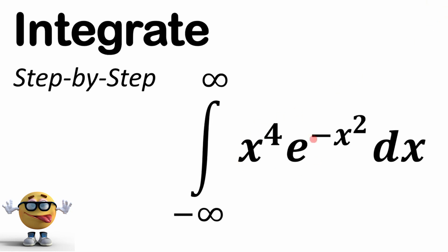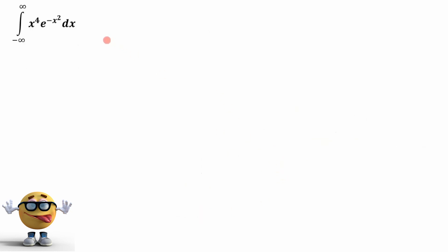My friends, we're going to evaluate the integral of x to the fourth times e to the negative x squared from negative infinity to infinity. This is a long integral, but we're going to do it very quickly. Note that I got many modifications of this integral if you want to check those out.